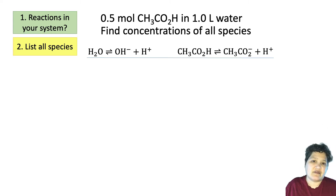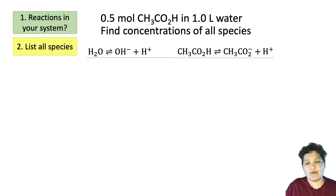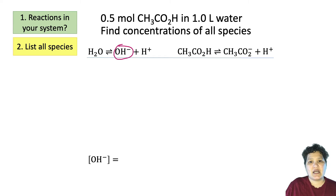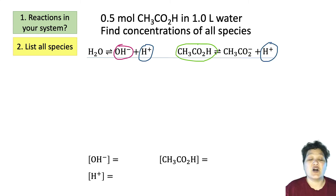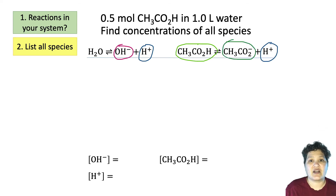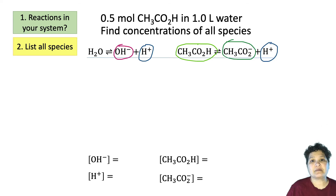We skip water since it doesn't factor into our equilibrium constants — it's a pure liquid. We have OH⁻, H⁺ appearing in two of the reactions, acetic acid (the protonated form), and acetate (the conjugate base). So now we have four species.